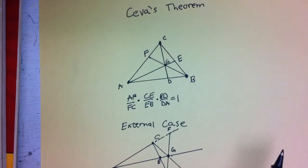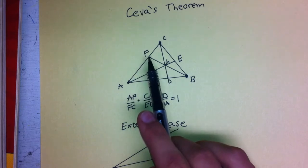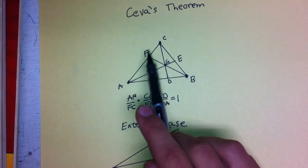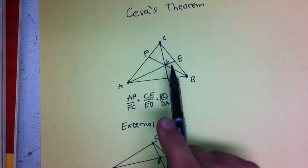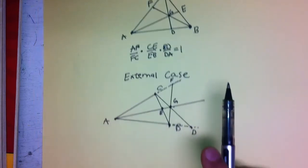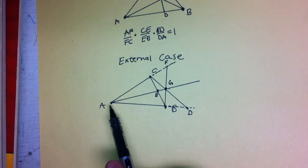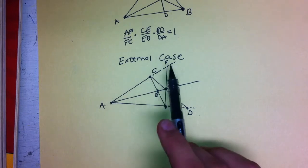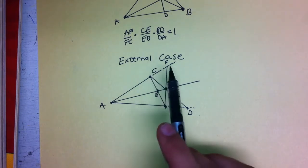That's exactly what we did in the internal case — we started at a point, went to the intersection point, then to the next point, then to the intersection point, then to the next point. However, with the external case, we have to realize that when we're going from the point to the intersection point, we're actually going to pass the next point and have to go back to it.